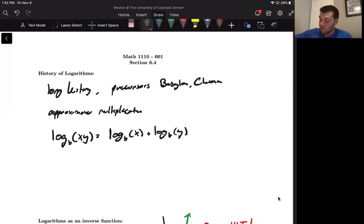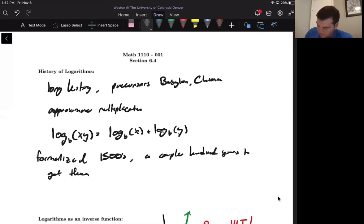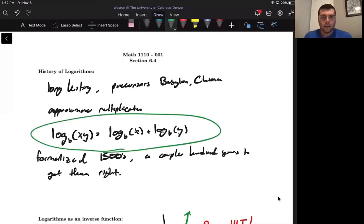Logarithms were then formalized in about the 1500s and actually took a couple hundred years to get them right. So it's mostly because people had this idea that you could use a function that has this property up here. And it just took a while to get that set straight. And I think this is just an important thing to keep in mind that in history, this is something that maybe took a hundred years to figure out. So that usually means it's not obvious.